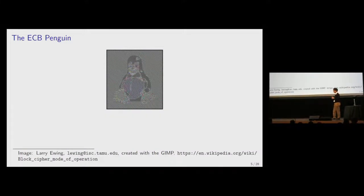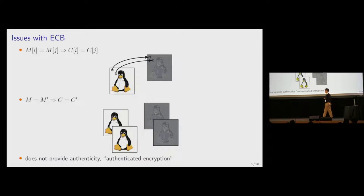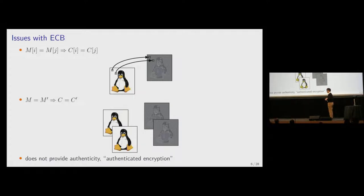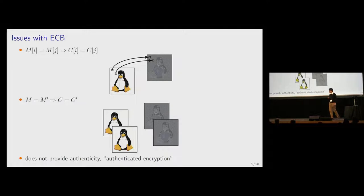The ECB mode has issues. One issue is that if we have two identical message blocks in one message, they are encrypted into the same ciphertext blocks — meaning two blocks of the same color encrypt to the same color — which is why we see the shape of the penguin in the ciphertext. The other issue is that if we encrypt the same message twice, we will have the same ciphertext twice.